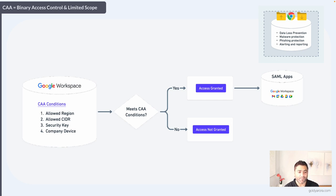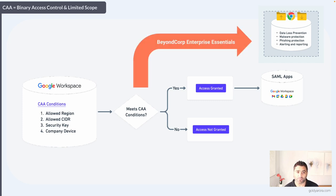For example, based on context I can access Google Drive — but what if we want a policy saying a user cannot download or upload sensitive content from or to Google Drive? That will come under BeyondCorp. If you need more protection from malware, phishing, and alerting, that will also come under BeyondCorp. If you just need more controls but your scope will still be SAML applications, Google Workspace native applications, or any known web app leveraging Google Chrome as a browser, you can go with BeyondCorp Enterprise Essentials, which is primarily meant for Google Workspace customers.